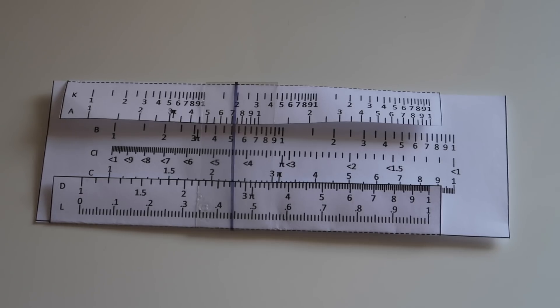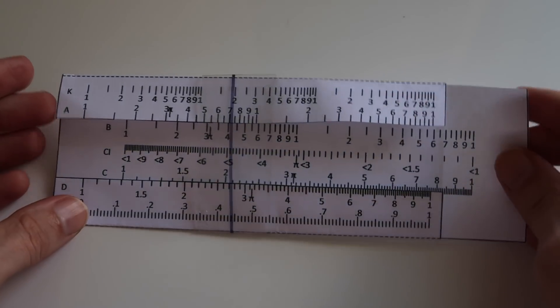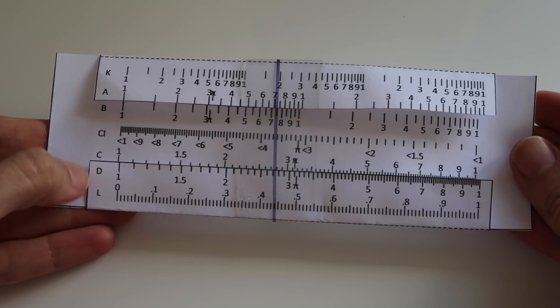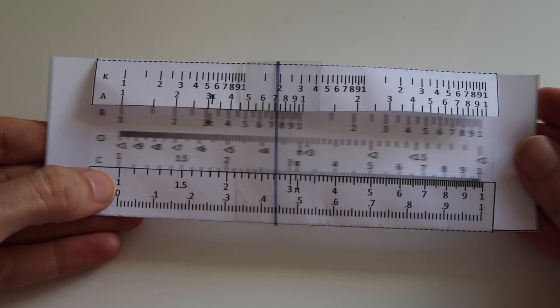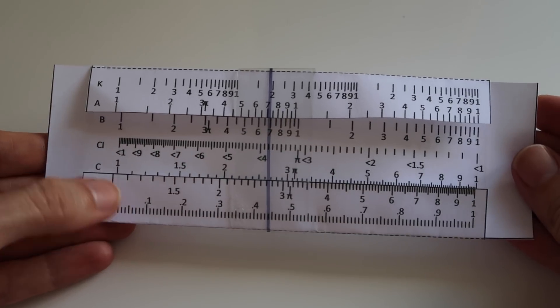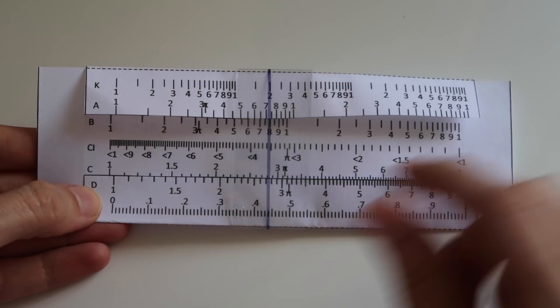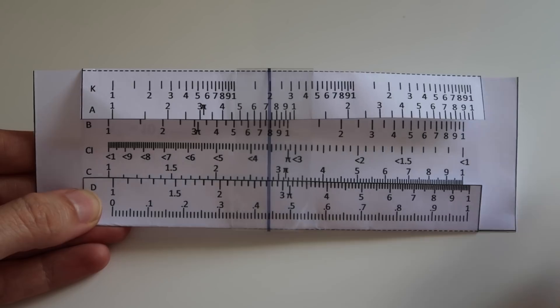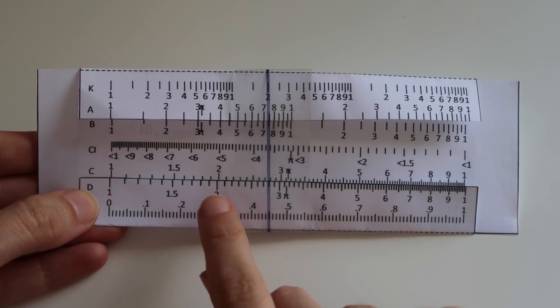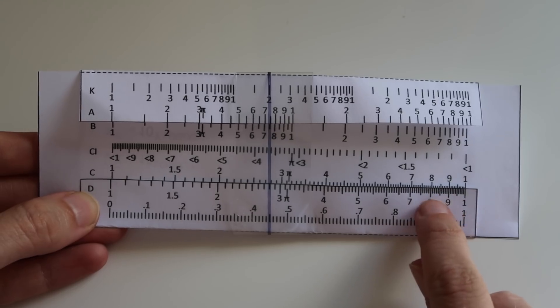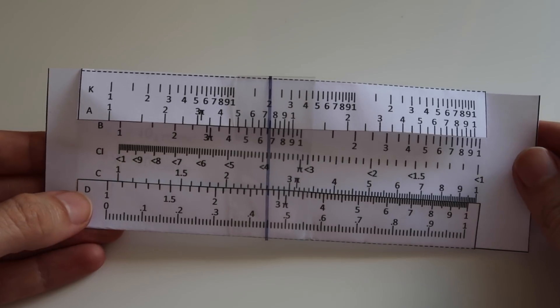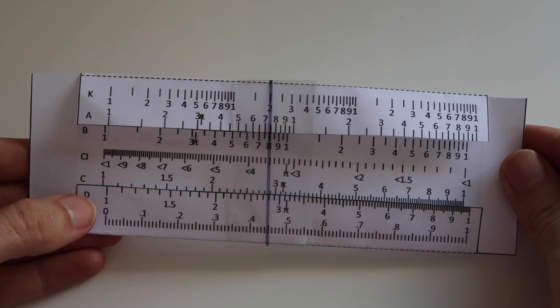So let's take a closer look at our slide rule here. Most of it we're not going to use today. We're just going to focus on lines C and D. C is the one that slides and D is the one here that it meets. You can see that C and D are both on a log scale because the distance between 1 and 2 is much greater than the distances up here later between like 8 and 9.